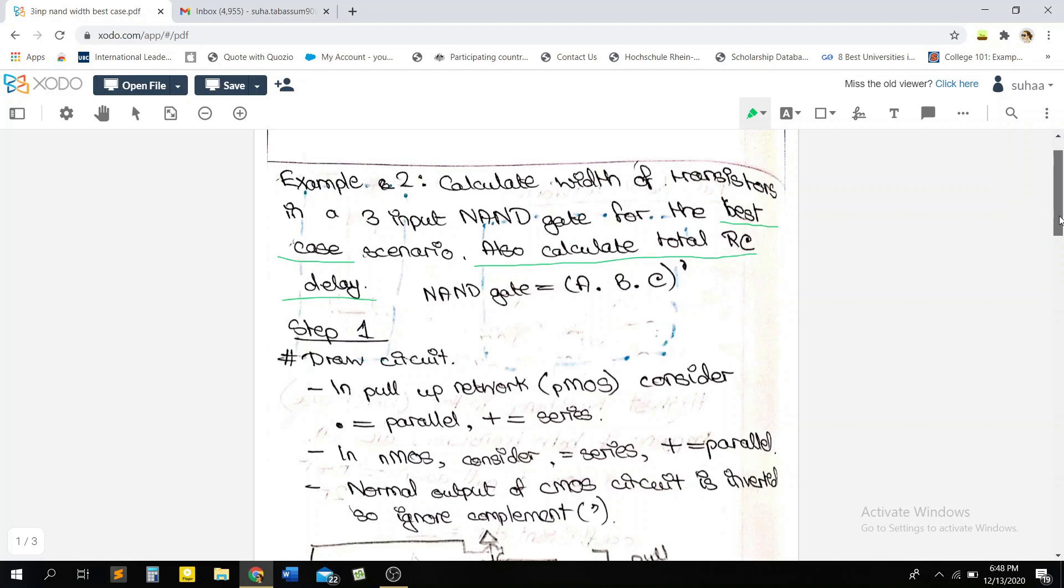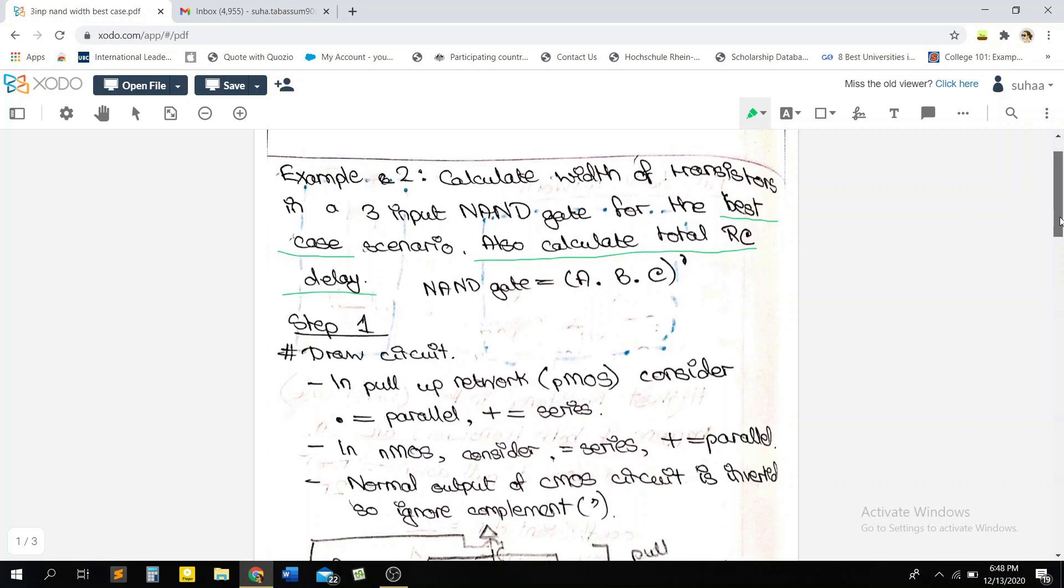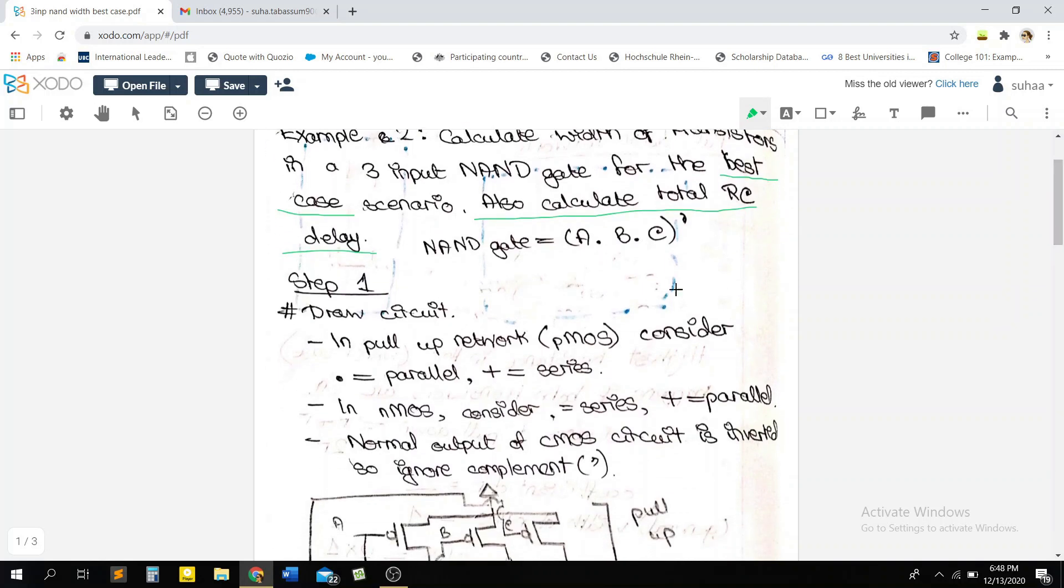So the first step in all of these problems is drawing our circuit. So for the three input NAND gate, we know that the NAND gate equation is basically this. For two inputs, it was A and B, and for three inputs, it's going to be A, B, and C.